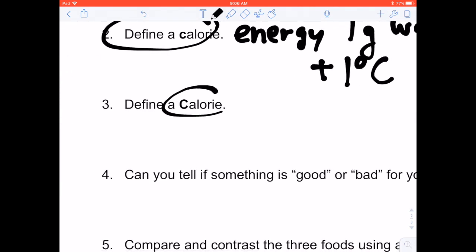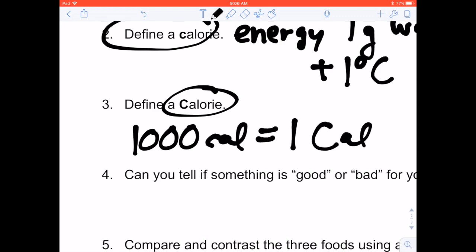A big C calorie is a food calorie. And there's 1,000 little c calories in one big C calorie, or food calorie.